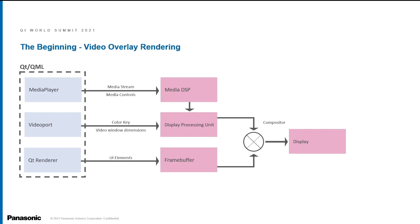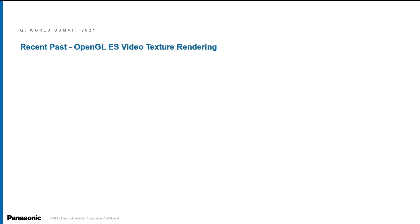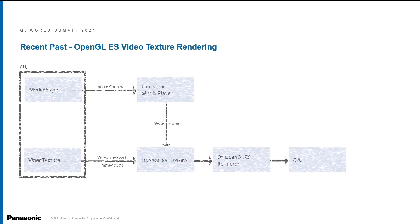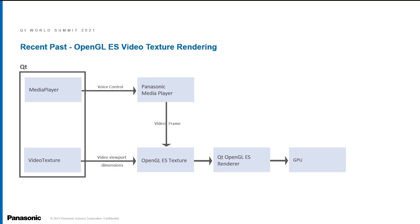Around 2012, new graphics capabilities in our hardware allowed us to do real-time video manipulations. We were able to render video directly to a graphics texture, which allowed us to manipulate the video just like any other graphic element. We were able to add blurs, have smooth animated video resizing or repositioning, and all kinds of great eye-popping effects. Some of you may recognize this as a technique used in the Qt Multimedia module.